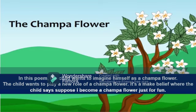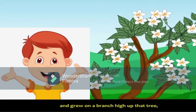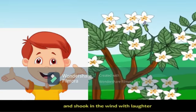In this poem, the child wants to imagine himself as a Champa Flower. The child wants to play a new role of a Champa Flower. It's a make-believe where the child says, 'Suppose I become a Champa Flower just for fun.' Supposing I became a Champa Flower just for fun and grew on a branch high up that tree and shook in the wind with laughter.